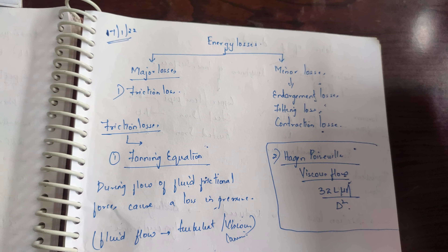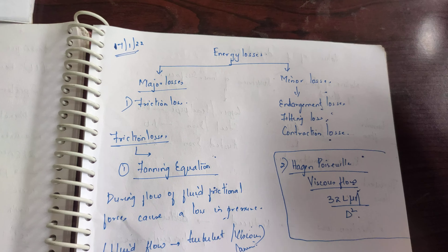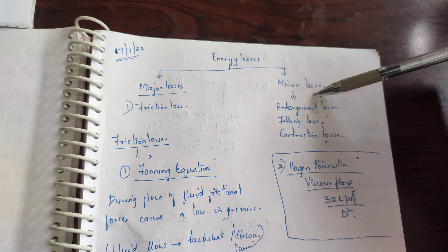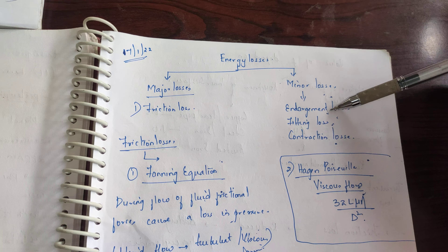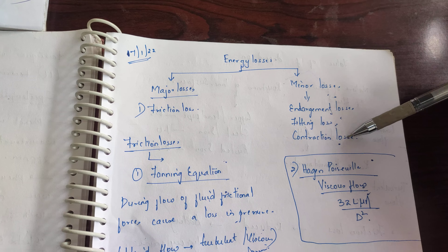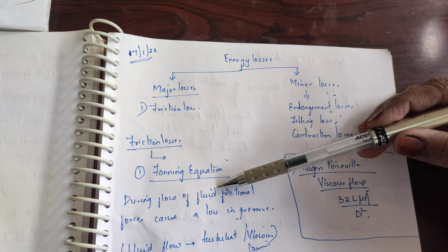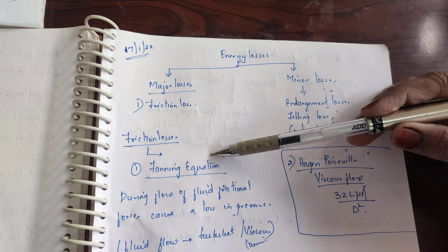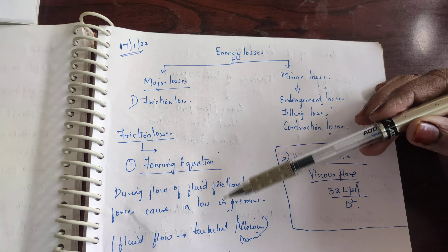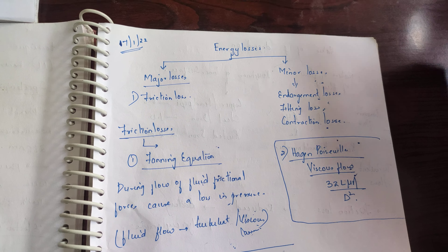In today's video we'll discuss energy losses. There are two types of energy losses: major losses and minor losses. Major losses are the frictional losses, and minor losses include enlargement loss, fitting loss, and contraction loss. Frictional losses are explained by the Fanning equation and the Hagen-Poiseuille equation. The Fanning equation is majorly used for turbulent flow or laminar flow, and the Hagen-Poiseuille equation is used for highly viscous flow of fluid.